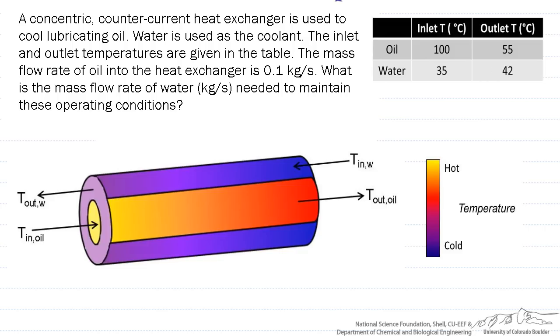what does the mass flow rate of the water have to be in order to achieve this outlet temperature of the oil of 55 degrees C.